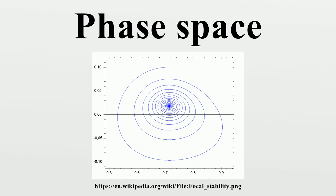In a phase space, every degree of freedom or parameter of the system is represented as an axis of a multidimensional space. A one-dimensional system is called a phase line, while a two-dimensional system is called a phase plane.